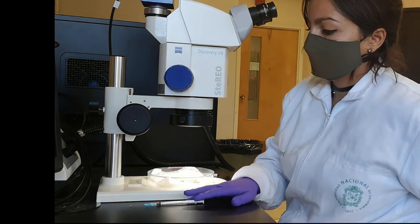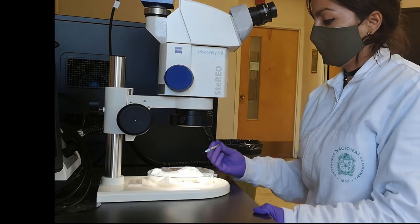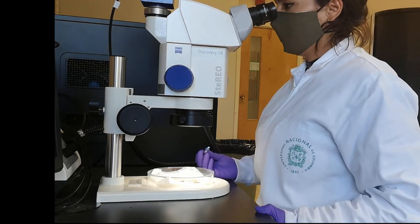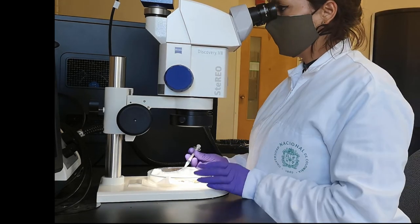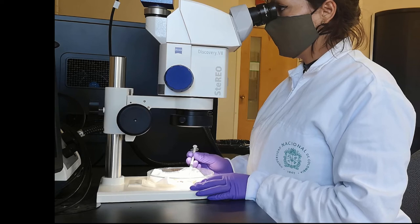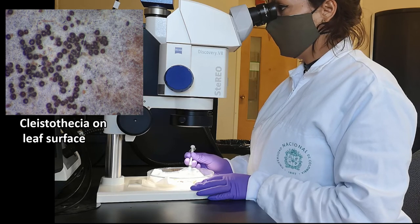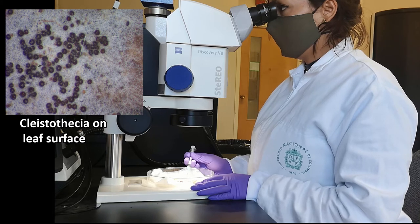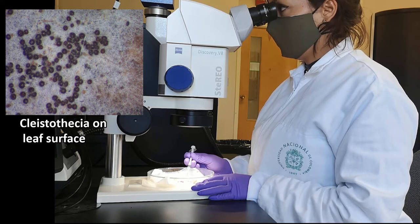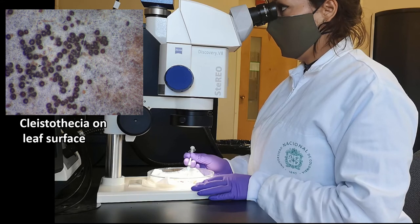Then we place a petri plate with the diseased leaf under the dissecting microscope and focus it. At this point we will be able to observe the cleistothecia over the leaf surface, as we can see in the upper left corner of the video.